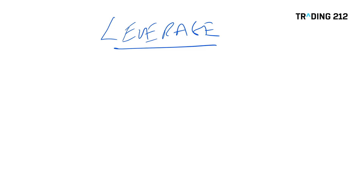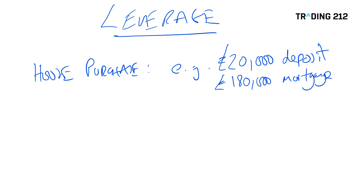Let's look at some everyday uses for leverage where it's pretty common. The obvious one is houses. There aren't many of us who'll go out and pay cash when buying a house, so there is an element of leverage involved. If we're buying somewhere for, let's say, two hundred thousand pounds, a deposit might be twenty thousand but we end up borrowing one hundred and eighty thousand. So there's one example of leverage in everyday life.